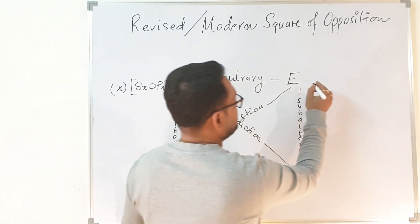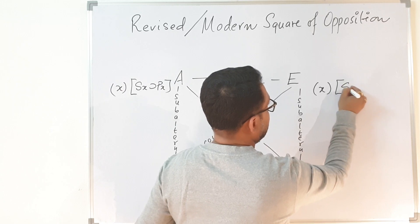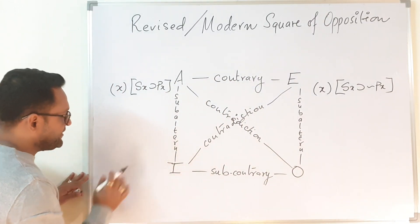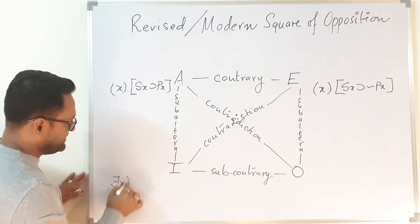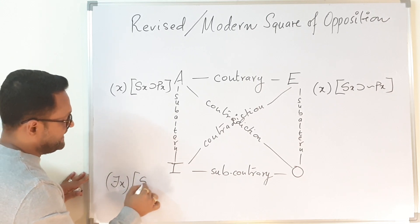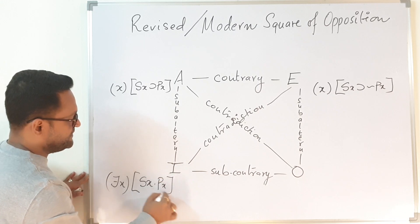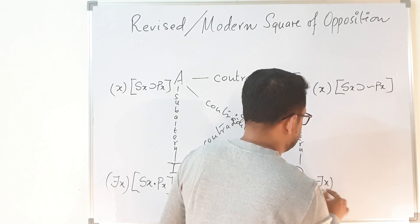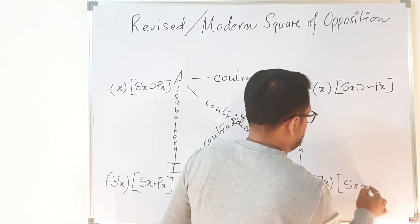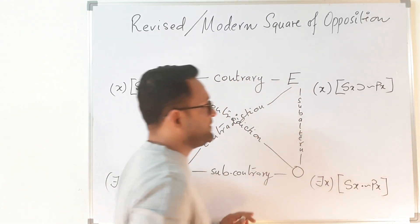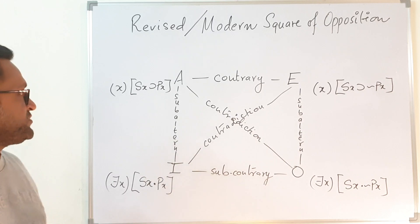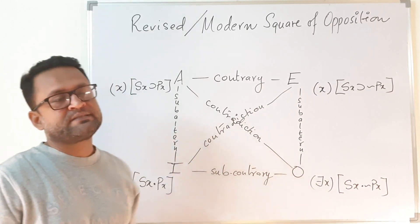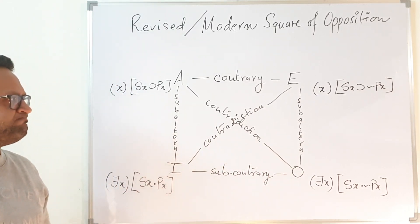For the E proposition, it is: there exists x, Sx dot Px. For the I proposition: there exists x, Sx dot Px. And for the O proposition: there exists x, Sx dot negation of Px. So these are the symbolizations — A, E, I, and O — as expressed in modern logic.